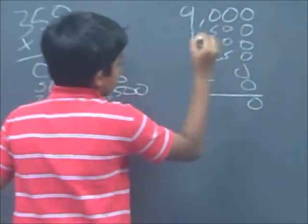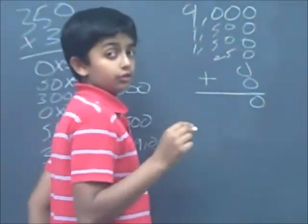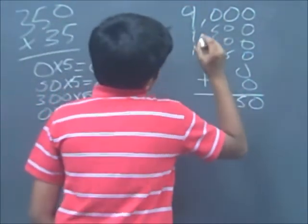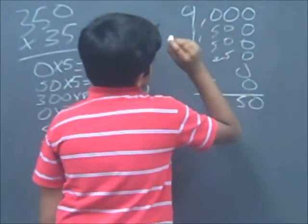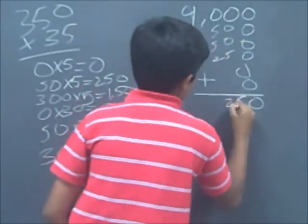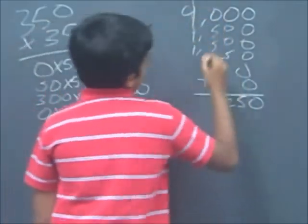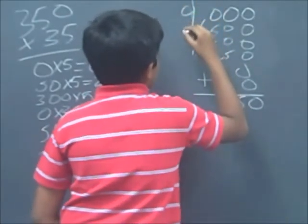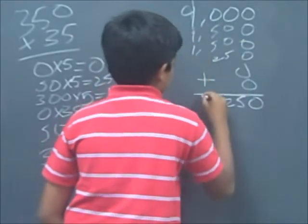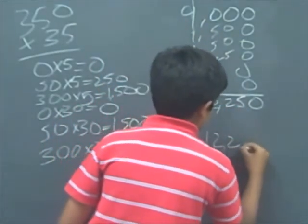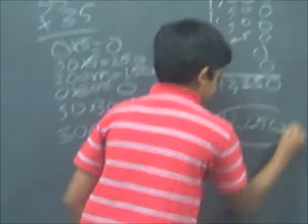This equals 0. Then next you have to add 0 plus 0, which equals 0, 0 plus 5 which equals 5, 5 plus 5 which equals 10, 10 plus 2 which equals 12. Then you have to do 9 plus 1 which equals 10, 10 plus 1 which equals 11, 11 plus 1 which equals 12. And the answer is 12,250.